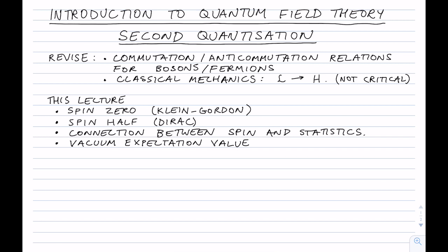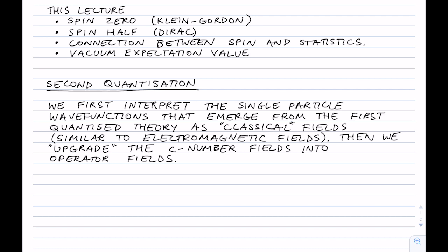In second quantization, the basic principle is that we first interpret the single-particle wave functions that emerge from the first-quantized theory — in other words, what we've been doing — as classical fields, similar to electromagnetic fields. Then we upgrade the c-number fields, i.e. the coefficients or the fields themselves, into operator fields, and in this way we quantize the theory again. That's why it's called second quantization.